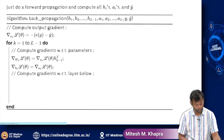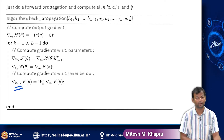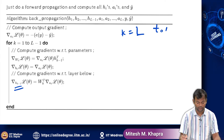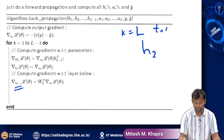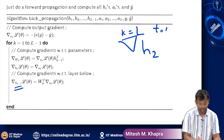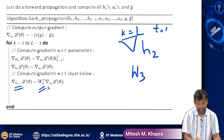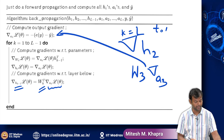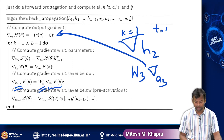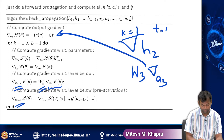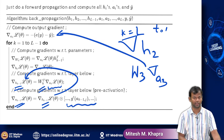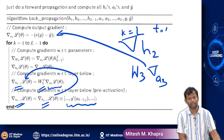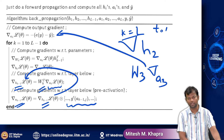Then you compute the gradients with respect to the layer below. You compute the derivative of the loss with respect to h(k-1). At k equal to L, k minus 1 is L minus 1, which is h2. For that you need w3 and the derivative with respect to a3 — both already available. Then you compute the gradients with respect to the pre-activation layer below. This loop keeps going until the first layer, computing all gradients with respect to all weights, activations, pre-activations, and biases.